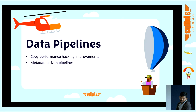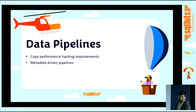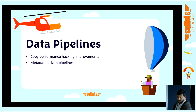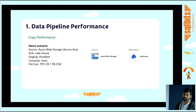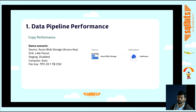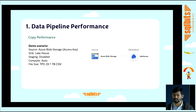Let's start with data pipelines. Within data pipelines, I have two topics to cover: copy performance and metadata-driven pipelines. For copy performance, I'll show a demo around how the copy works. The use case is pulling a 1TB CSV file stored in Azure Blob Storage and moving it to Fabric Lakehouse as a binary copy — not as a table, just a binary copy — with all other settings left at default, meaning staging is disabled and compute is set to auto.